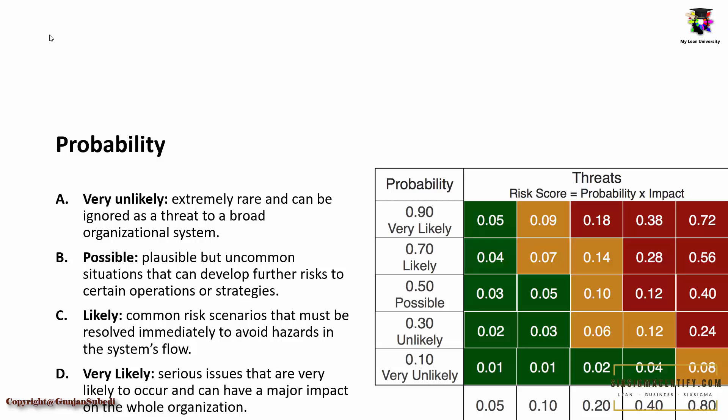Now let's look at the risk score using the probability impact matrix. Suppose a project event causes a very high or catastrophic impact, but the probability is very unlikely. To find the risk score, we look at the impact score of 0.8 for very high impact and find the very unlikely probability row. Where the very unlikely row and the most impactful column intersect, we get a value of 0.08. So the risk score in this case is 0.08.